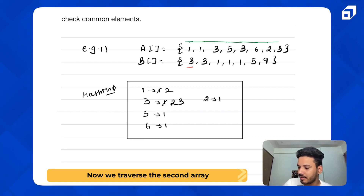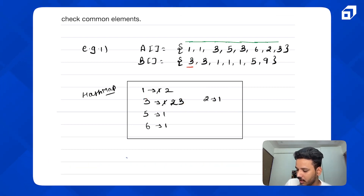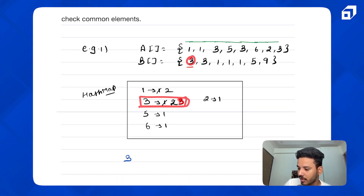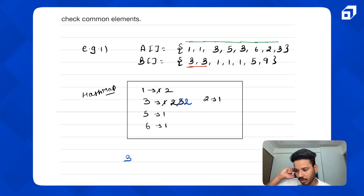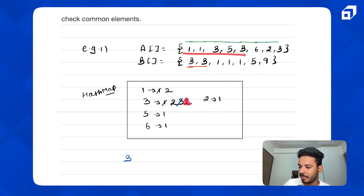Now we traverse the second array. We find a three — there is at least one three in the second array, and in the first array there were three threes, so at least one is common. We store three in the result and reduce its frequency to two. We find another three — three is still in the map with frequency two, so we add another three and reduce frequency to one.